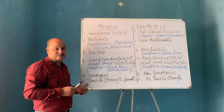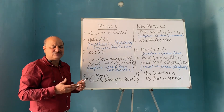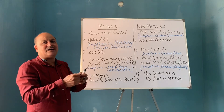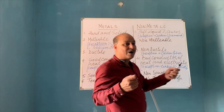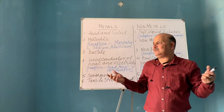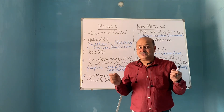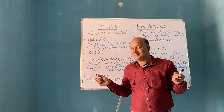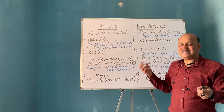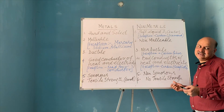One more point is tensile strength. When we try to stretch a metallic substance into wire by stretching it — with our hands or with the help of a machine — it is not going to break. This tells us it has good tensile strength. Non-metals do not have good tensile strength.